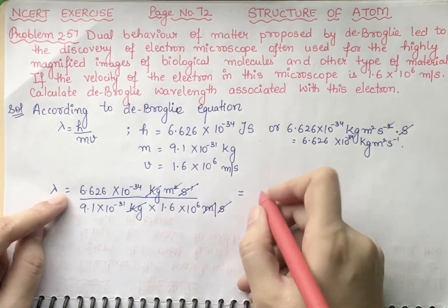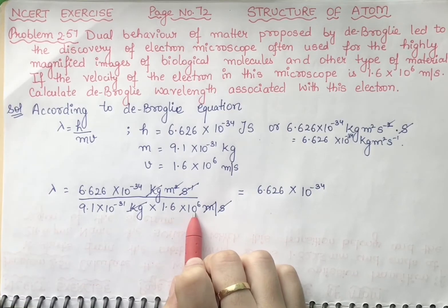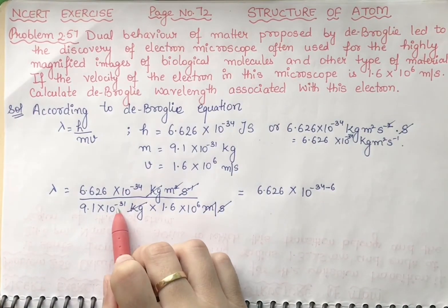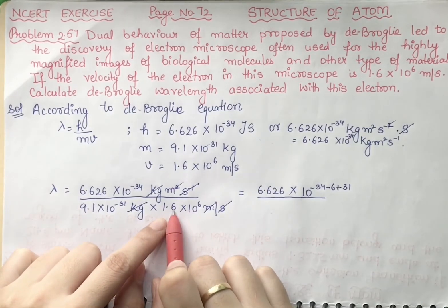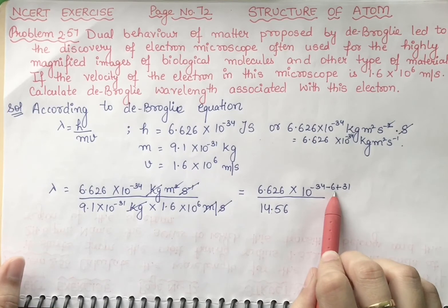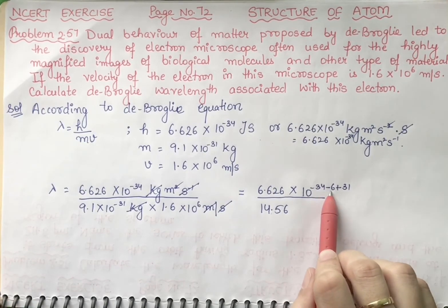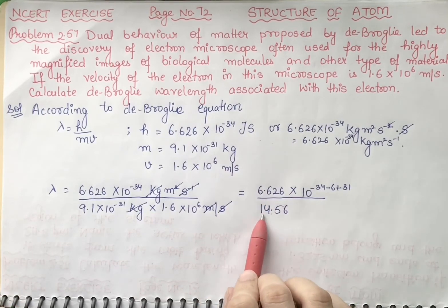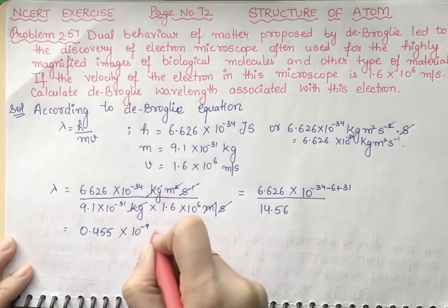Now simplifying: for the powers of 10, we have 10⁻³⁴ in the numerator. The 10⁶ in the denominator becomes 10⁻⁶ in the numerator, and 10⁻³¹ in the denominator becomes +31 in the numerator. So the exponent is: −34 + 6 + 31 = −40 + 31 = −9. Multiplying 9.1 × 1.6 = 14.56, and 6.626 ÷ 14.56 = 0.455. So lambda = 0.455 × 10⁻⁹ meter.